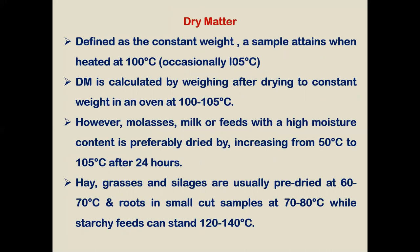Dry matter is calculated by weighing after drying to constant weight in a hot air oven at 100 ± 2 degrees centigrade. A deviation of 1 or 2 degrees centigrade doesn't affect the calculation. However, for the moisture content of liquid feeds like molasses and milk, or feeds having high moisture content like green fodder, we dry this kind of sample starting at a lower temperature, beginning at 50 degrees centigrade and then slowly increasing to 100-plus degrees centigrade.